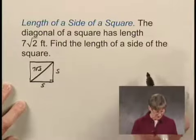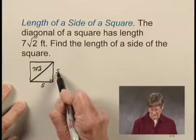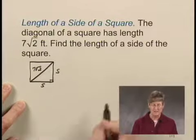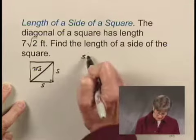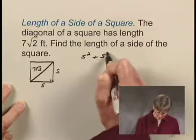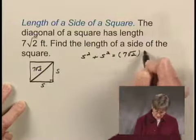The Pythagorean theorem says that this side squared, the length of this side squared plus the length of this side squared is equal to the length of the hypotenuse of the right triangle squared. So we can say that S squared plus S squared is equal to 7 times the square root of 2 squared.